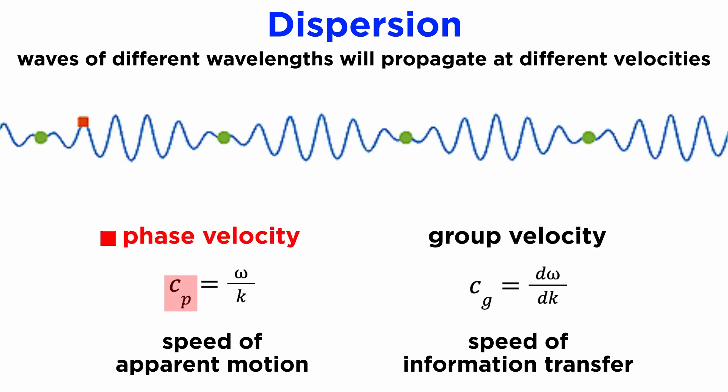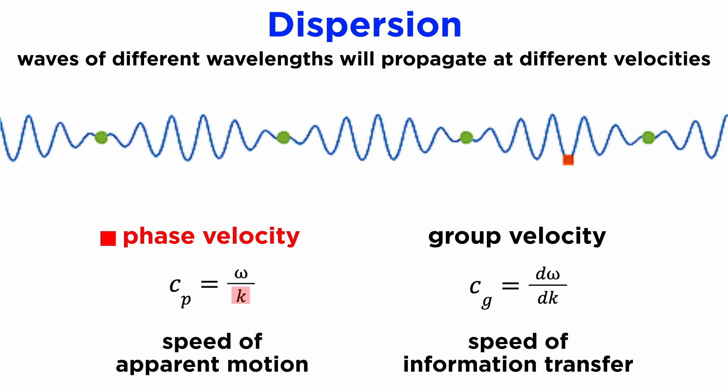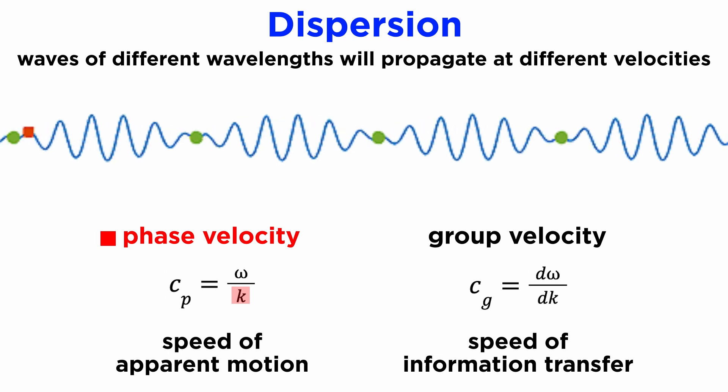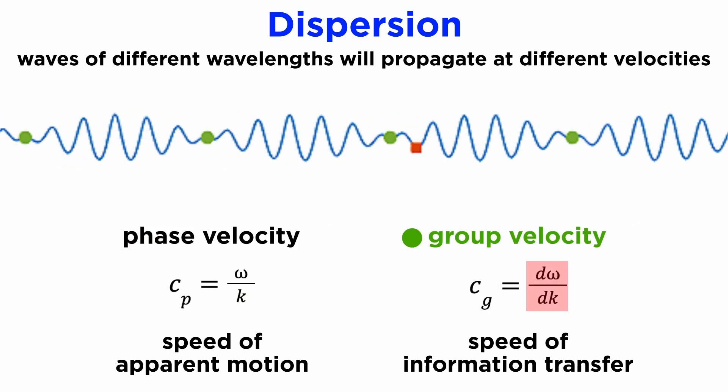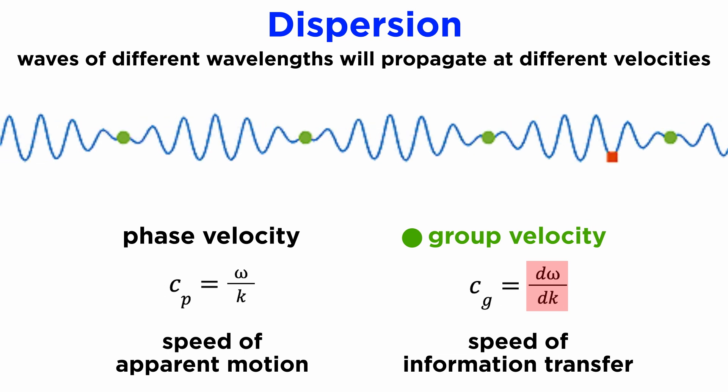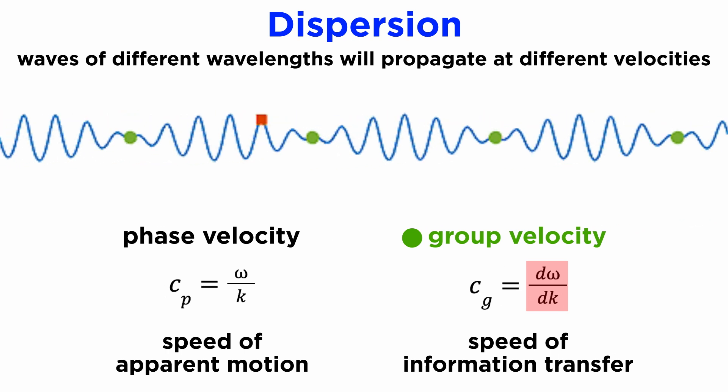The phase velocity is equal to the temporal frequency omega divided by the wave number k, or the magnitude of the k vector in higher dimensions, while the group velocity is equal to the derivative of omega with respect to k given some dispersion relation expressing omega as a function of k.